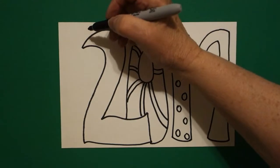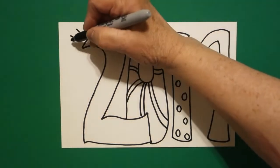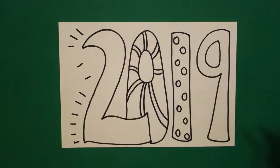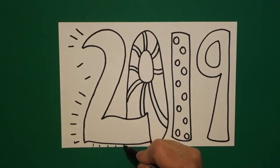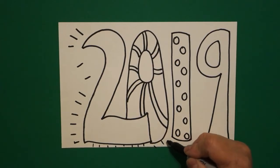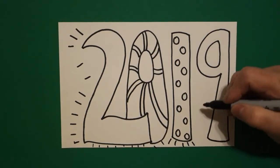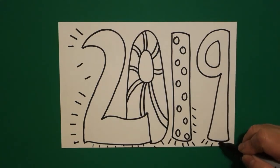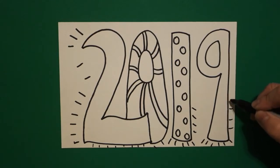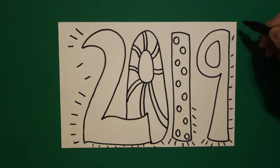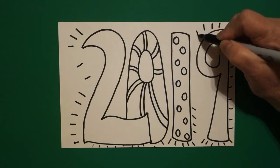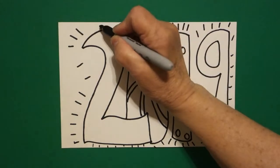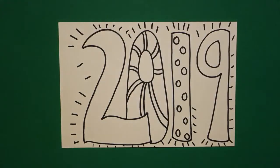And now we're going to add straight lines coming out and following each one of our numbers. Bring them up, bring them out, bring them over, bring them down, bring them up, bring them over, bring them up, bring them down, up, down, up, and over.